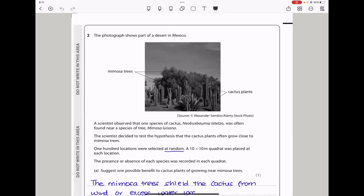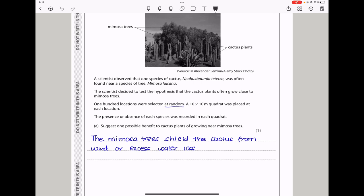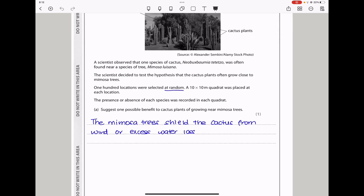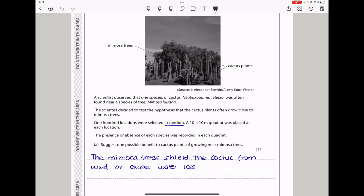Let's continue to question two. The photograph shows part of a desert in Mexico. We can see this is a desert with mimosa trees and cactus plants. A scientist observed that one species of cactus was often found near a species of tree, mimosa. The scientists decided to test the hypothesis that cactus plants often grow close to mimosa trees. 100 locations were selected at random. This is very important for the results to be considered valid. A 10 by 10 meter quadrat was placed at each location, and the presence or absence of each species was recorded. If you look at the figure, the mimosa plants are quite huge and tall, so they can shield the cactus from wind.